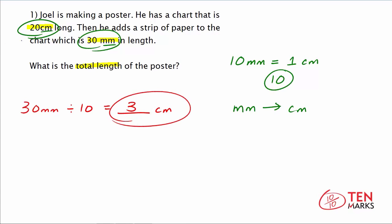So now what we can do is add to find the total length of the poster altogether. The chart is 20 centimeters. He adds a strip of paper which is 3 centimeters. And 20 plus 3 equals 23. So that means the length of Joel's poster is 23 centimeters.